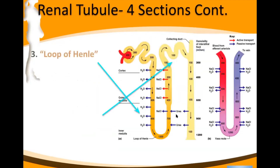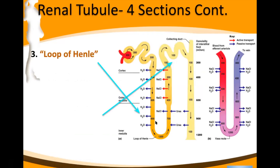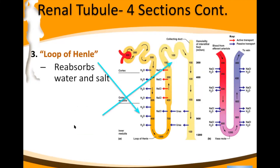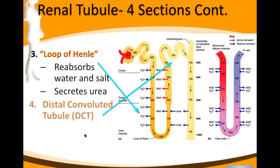The loop of Henle is mostly for adjusting water volume and blood volume. It reabsorbs water and salt — water follows salt, so if salt moves, water follows. The loop also secretes more nitrogenous waste like urea.